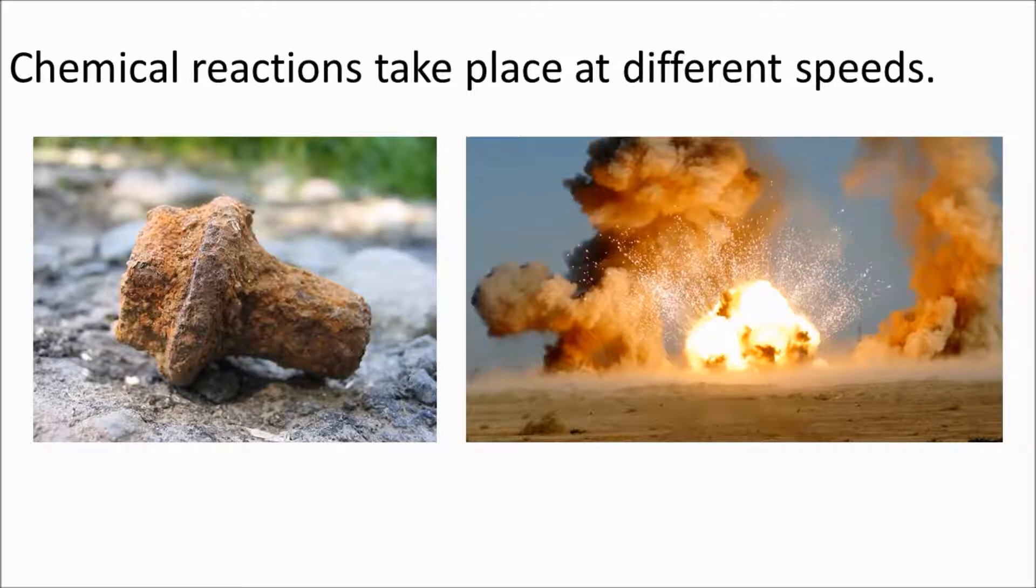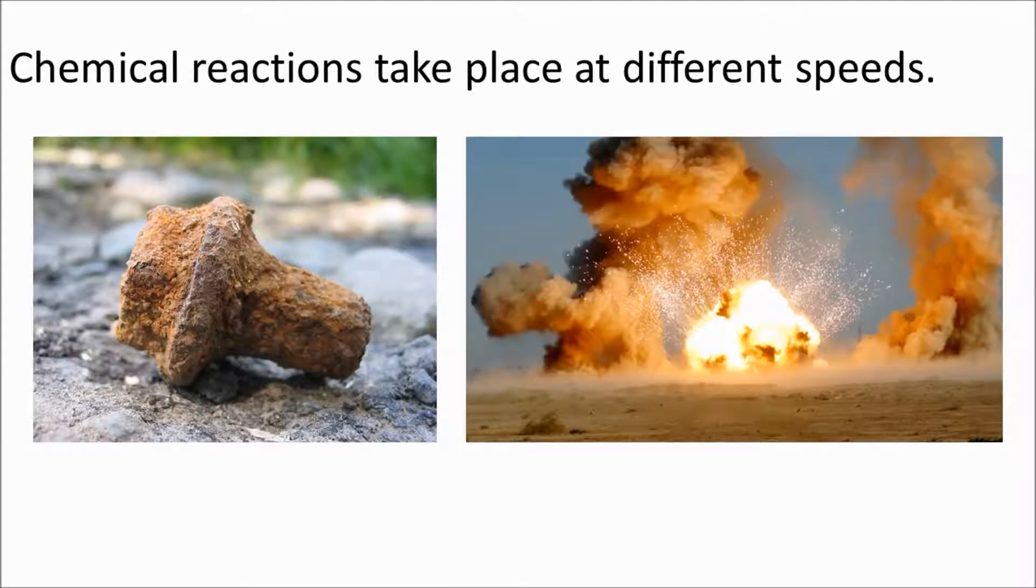So how do you measure how fast a reaction is happening? Here we've got a reaction where a gas is produced. And if we use a conical flask you can measure the mass lost or the volume of gas produced in a minute.